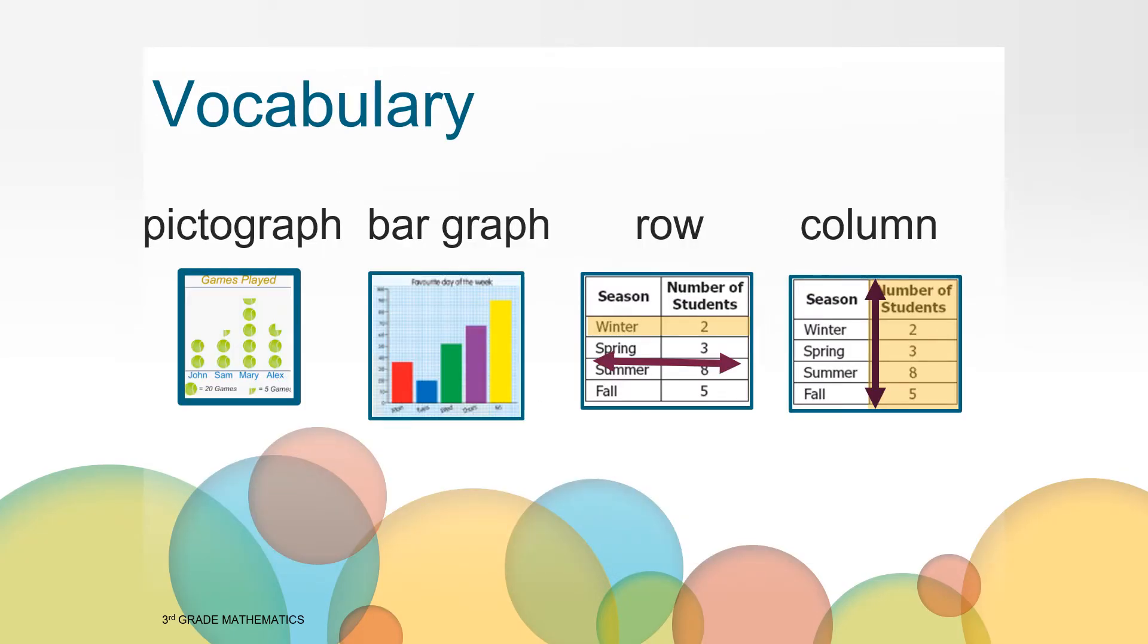You may hear some words that are new to you today so as we work together listen for those words and try to make connections between the new words and what we are learning. The first word is pictograph. A pictograph is a graph that uses pictures to represent the information collected. Next is a bar graph. A bar graph is a graph that uses bars to represent the information collected. A row goes across from left to right and a column goes up and down.